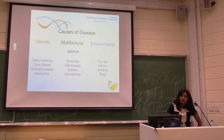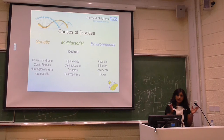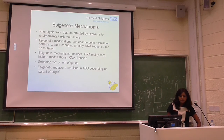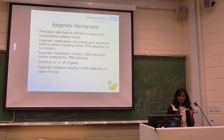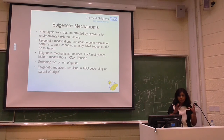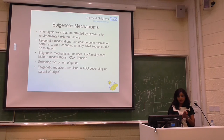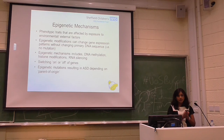Moving on to non-Mendelian patterns of inheritance: one thing that's perhaps slightly more important in the context of autism is multifactorial inheritance, where there's a combination of genetic and environmental factors playing a role. We also talk about epigenetic mechanisms, where phenotypic traits are affected by exposure to environmental or external factors. Epigenetic modifications change gene expression patterns but don't change the primary DNA sequence — so there's no mutation as such. Mechanisms include DNA methylation, histone modification, and RNA silencing. Epigenetic mutations that result in ASD would very much depend on the parent of origin — whether it's maternally or paternally inherited matters.